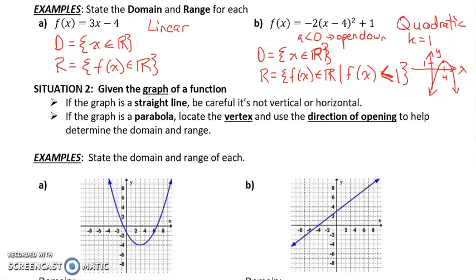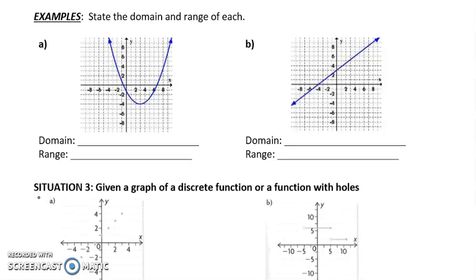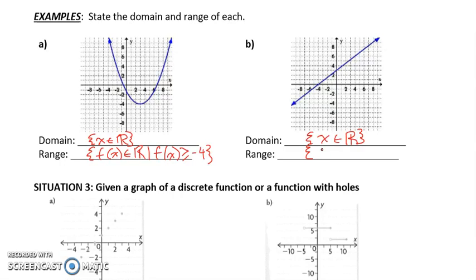The second situation is if we're given the graph of a function. If the graph is a straight line, be careful it's not vertical or horizontal — we already talked about that. If it's a parabola, we want to locate the vertex and use the direction of opening to help determine the domain and range. I actually think this is easier than doing it from the equation. So let's state the domain and range of each. The domain of the following function is X is a set of all real numbers — it's a parabola. The range: F of X is a set of all real numbers such that F of X is greater than or equal to negative 4, since the K value is negative 4 and it opens up. For the linear function, the domain and range both have no restrictions.